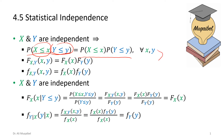We can say that two variables are statistically independent if the joint CDF equals the multiplication of the marginal CDFs. Similarly, two random variables are statistically independent if the joint PDF equals the multiplication of the marginal PDFs. In either case, we say that X and Y are independent.